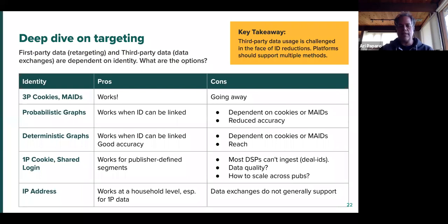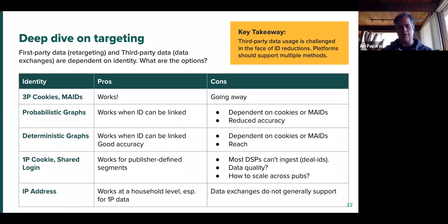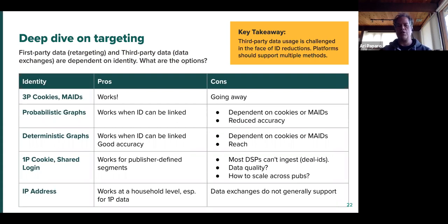We have to watch out because these graphs currently are very dependent on cookies or MAIDs, which are going away. So using those graphs in the future is going to be dependent on making them work with different forms of identity, like first-party cookies. That is a work in progress. Unless the world moves to more first-party data, you're going to have the usefulness of those graphs go down. First-party cookies are an area of lots of activity — many entrepreneurial companies are investing in publisher-side first-party data for targeting. The idea is the publisher determines users in a segment and makes that data available to the buy side without necessarily syncing cookies or syncing identity.